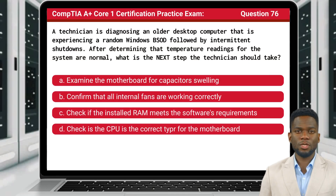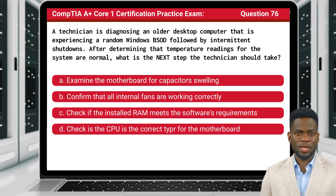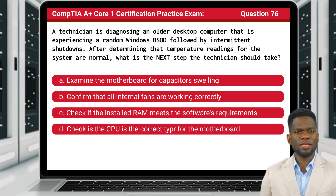Question 76: A technician is diagnosing an older desktop computer that is experiencing a random Windows BSOD followed by intermittent shutdowns. After determining that temperature readings for the system are normal, what is the next step the technician should take?